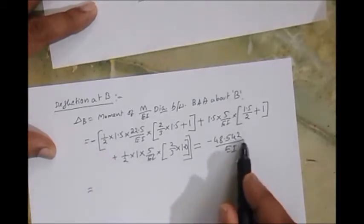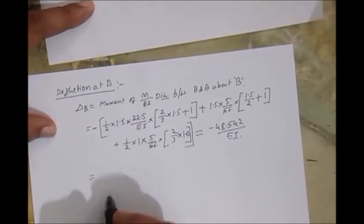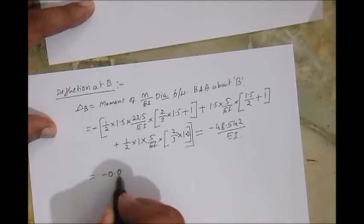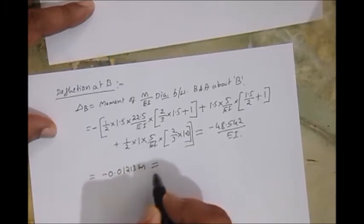So it is minus 48.542 by EI. Now substitute the values of EI, so what you're going to get is minus 0.01213. Answer is in meters, so convert this one into mm.